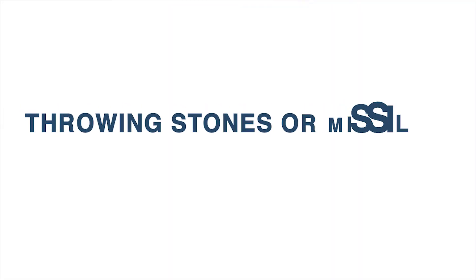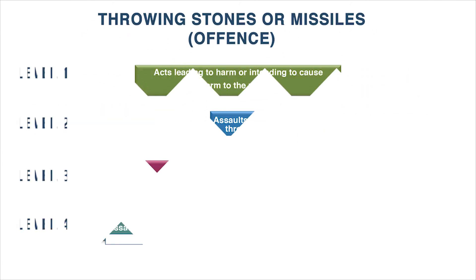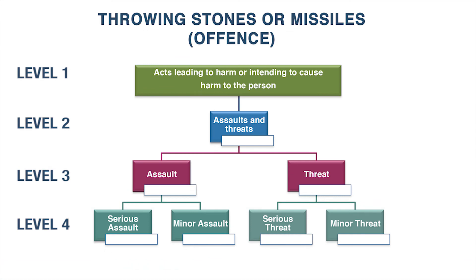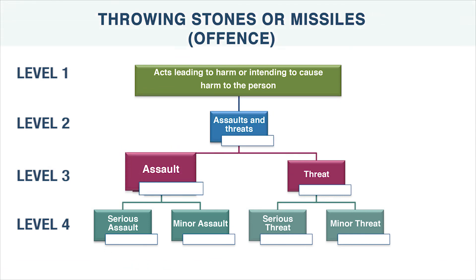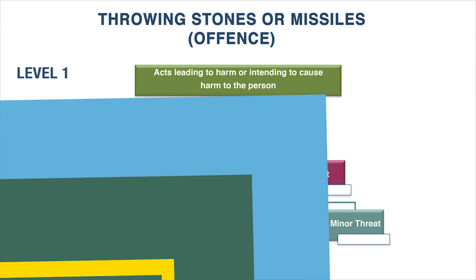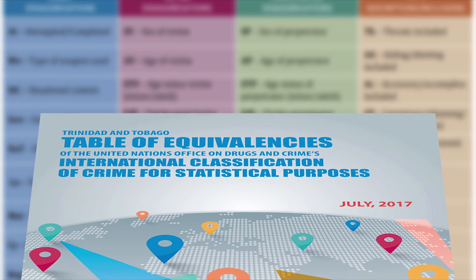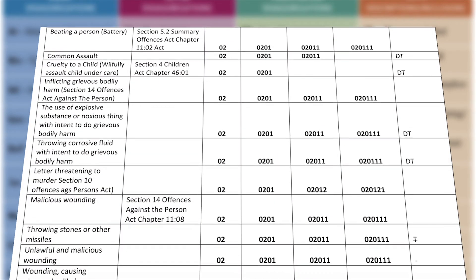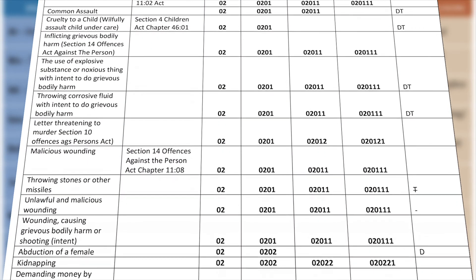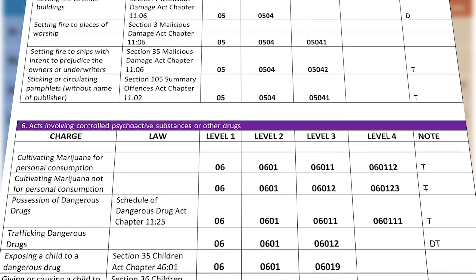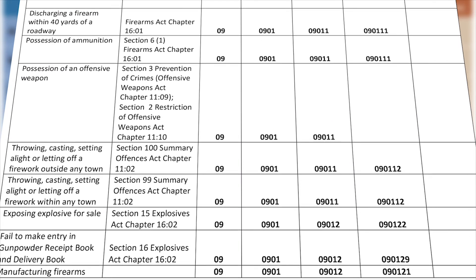The team of agency representatives took criminal offenses and carefully matched them to one of the level one categories. Then they went on to align the offenses to level two categories, level three categories and where necessary, looked for alignments to level four categories, each time assigning the appropriate numerical code. The result was a table of offenses and codes seamlessly aligned to the ICCS — the Trinidad and Tobago Table of Equivalencies of the International Classification of Crime for Statistical Purposes. Trinidad and Tobago is the first country within the CARICOM region to produce a crime classification structure that is streamlined with the ICCS.